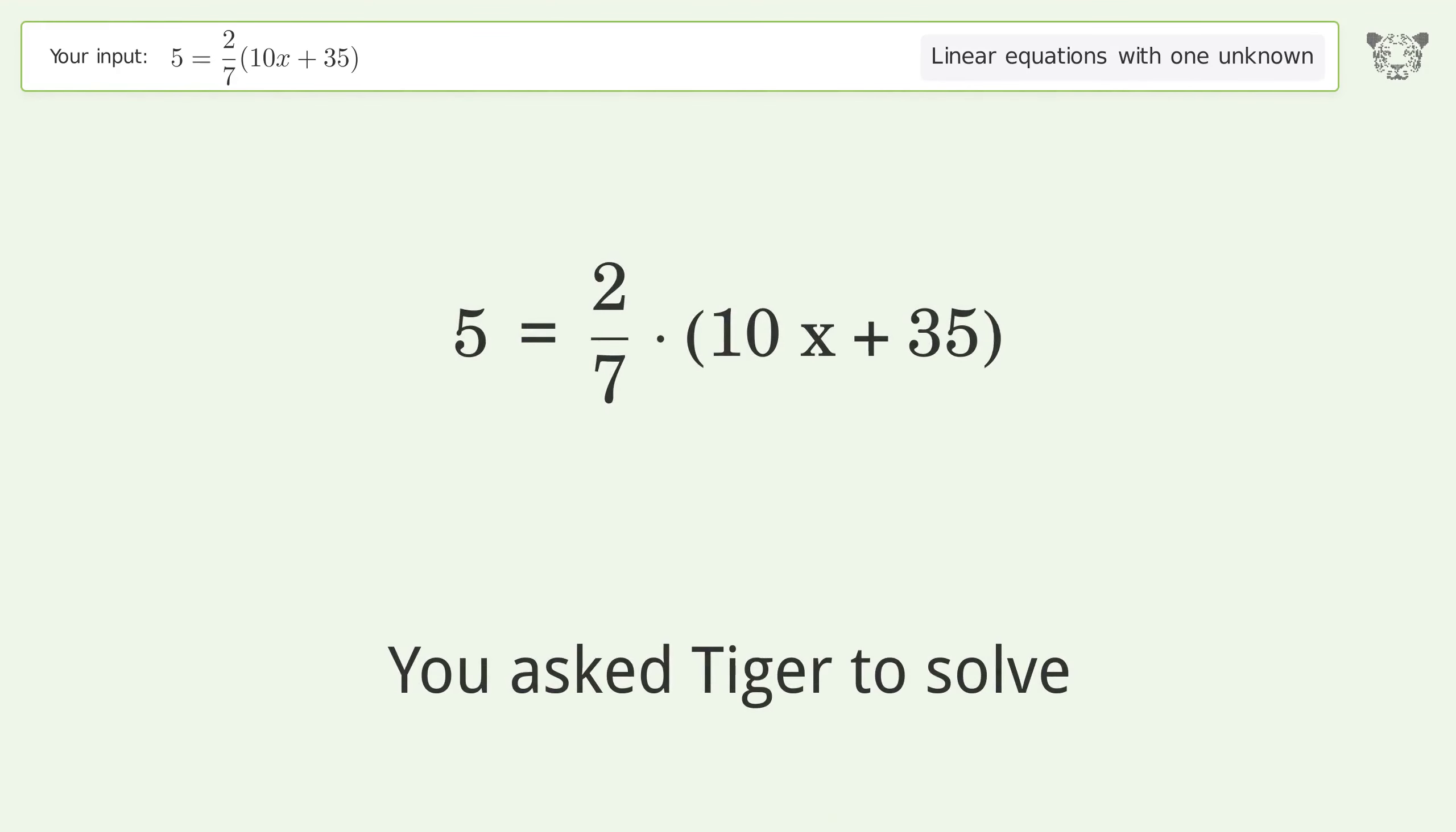You asked Tiger to solve this linear equation with one unknown. The final result is x equals negative 7 over 4.